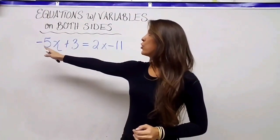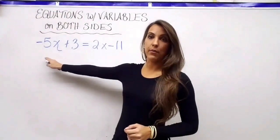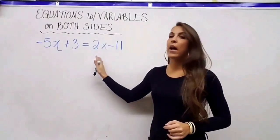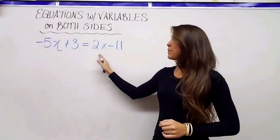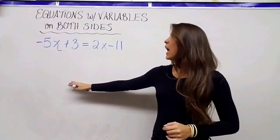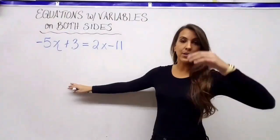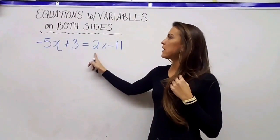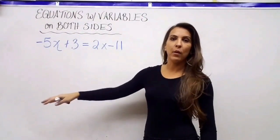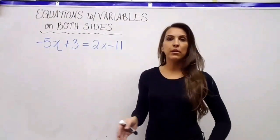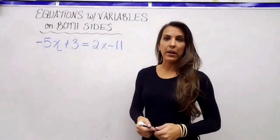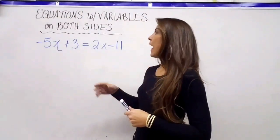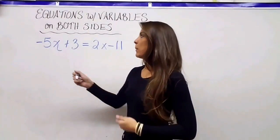You have two options: you can add 5x to both sides to get rid of the negative 5x, or we can subtract 2x from both sides. Either way will get us the answer, but I notice that if I subtract 2x I'm going to have a negative, and whenever possible it's best to avoid negatives and fractions because that's when a lot of mistakes happen.